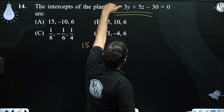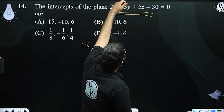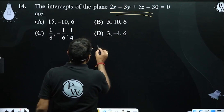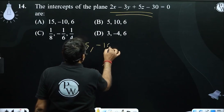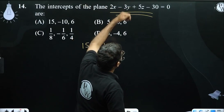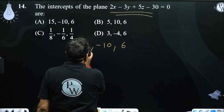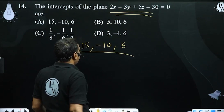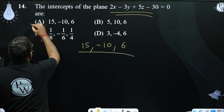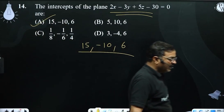For the y-intercept, setting x and z to 0 gives y = -10. For the z-intercept, setting x and y to 0 gives z = 6. So the intercepts are 15, -10, and 6.